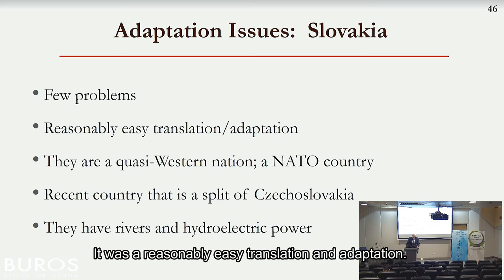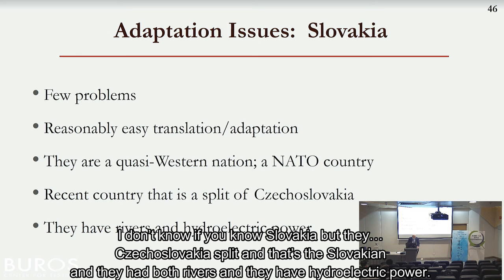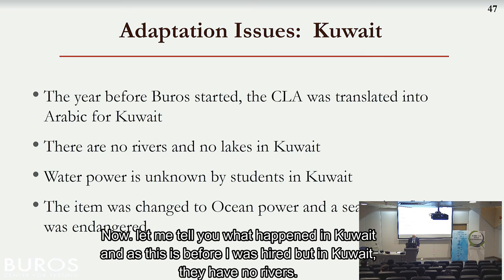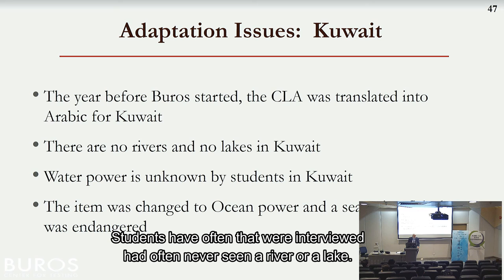Slovakia had almost no problems at all — it was a reasonably easy adaptation. They are a quasi-Western NATO country; they have rivers and hydroelectric power. Kuwait, however, was a very different story — and this had been done before I was hired. In Kuwait, they have no rivers, no lakes, and no hydroelectric power. Students interviewed had often never seen a river or a lake. That's a fairly significant cultural difference. They actually changed the problem to getting water power from the ocean, with an ocean-going endangered fish — though it's unclear whether you can actually generate hydroelectric power from the ocean.